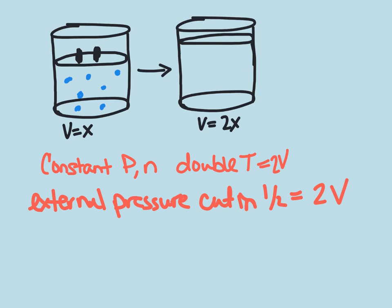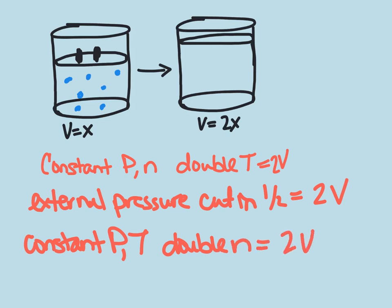And then finally, if you have a constant pressure and temperature but you double the number of moles, then you will also double the volume of your container.